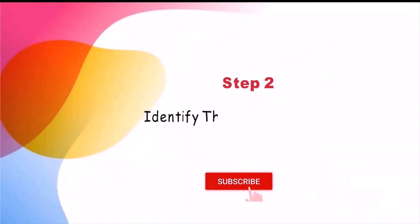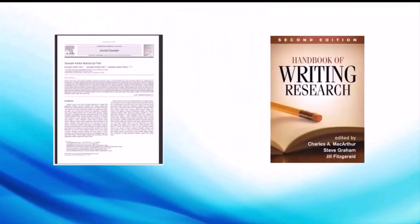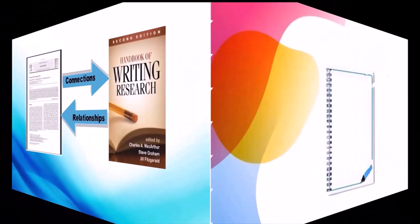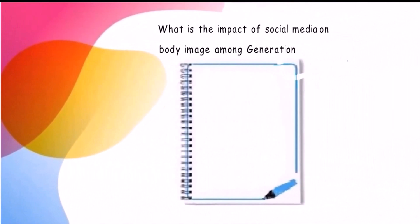In this video you will learn step two of writing a good literature review, which is how to identify themes, debates, and gaps in your literature. To begin organizing your literature review's argument and structure, you need to understand the connections and relationships between the sources you've read, based on your reading and notes. Let's recap our topic: what is the impact of social media on body image among generation?